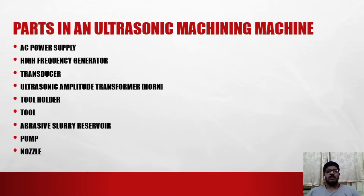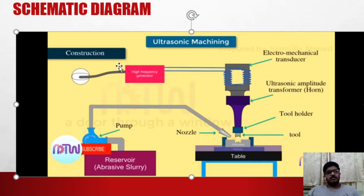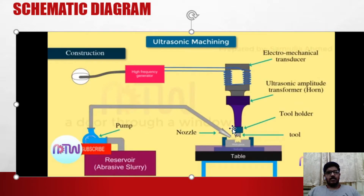Now we'll see the diagram of the ultrasonic machining process. This is the AC supply — 50 hertz in India or 60 hertz in other countries. This is the high frequency generator. This is the transducer; it can be an electromechanical transducer or a piezoelectric transducer. This is the ultrasonic amplitude transformer, or horn. This is the tool holder, and this part is called the tool. Here is the abrasive slurry, here is the pump, and here is the nozzle.